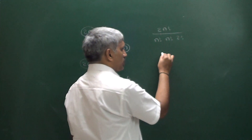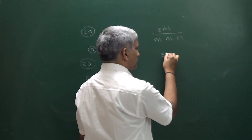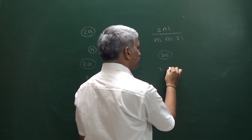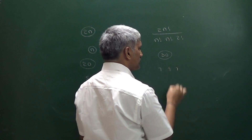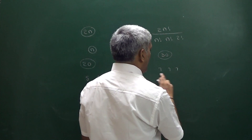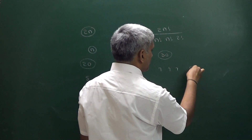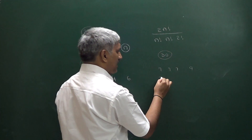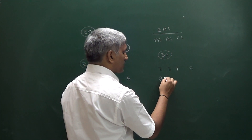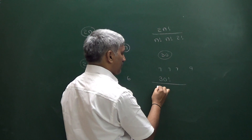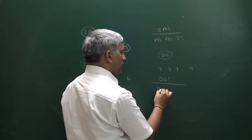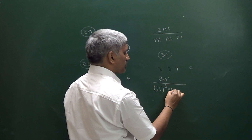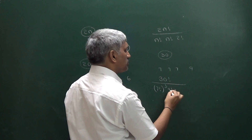They can be divided in 20 factorial divided by 5 factorial into 5 factorial into 4 factorial into 6 factorial. Here there are 2 equal groups of 5, so we divide by 2 factorial. Now suppose we have total 30 items. These 30 items we have to divide into groups of 7, 7, 7, and 9.